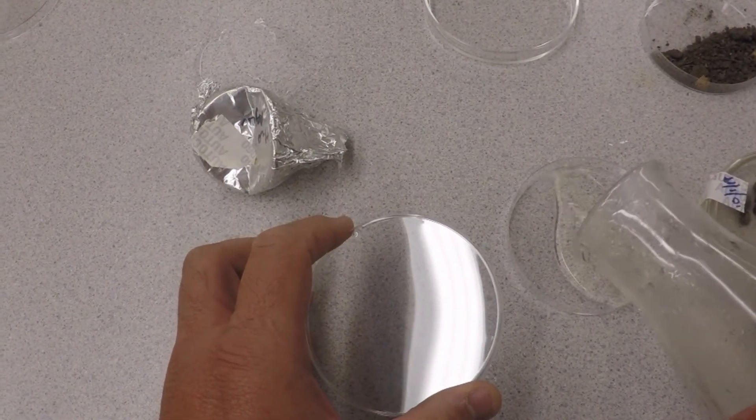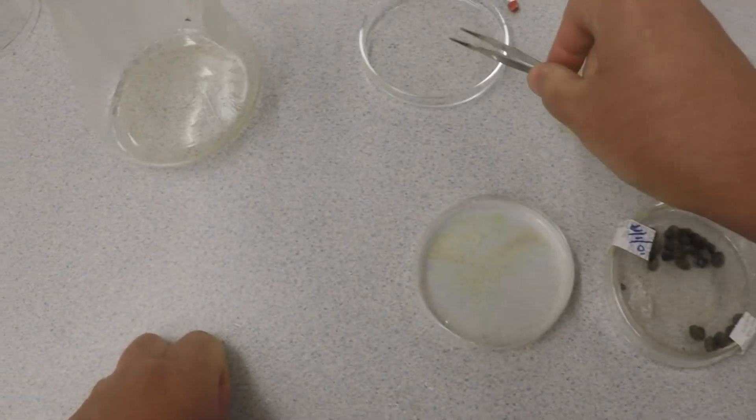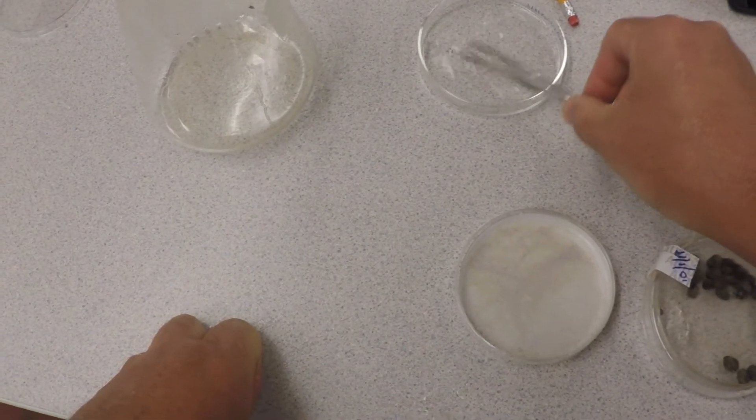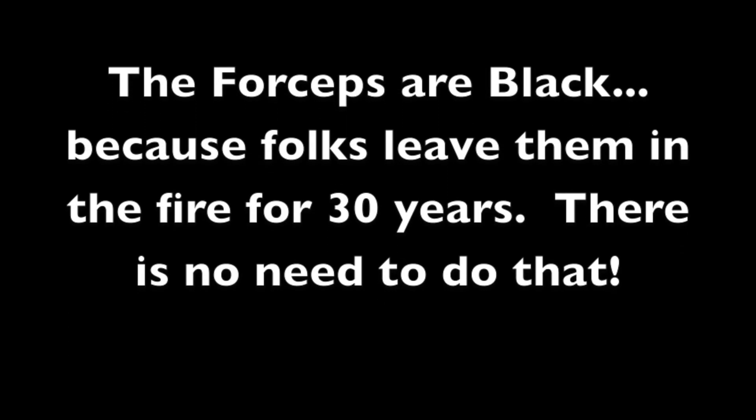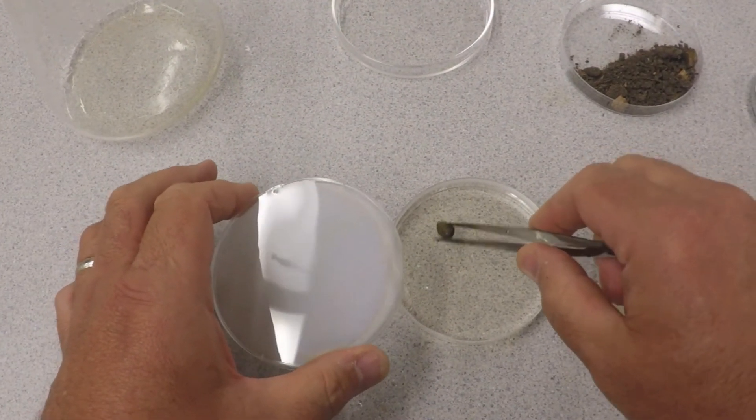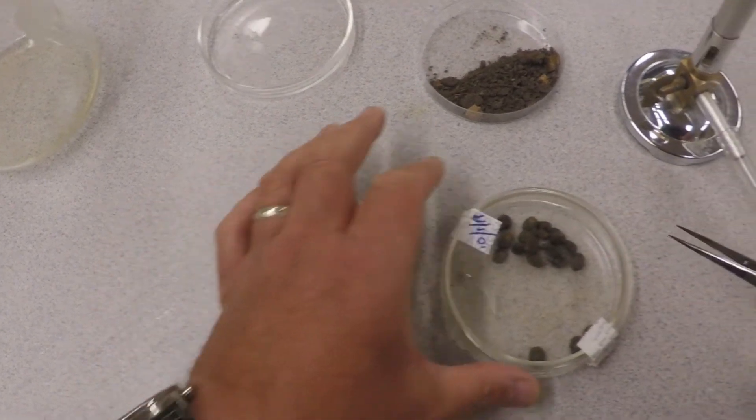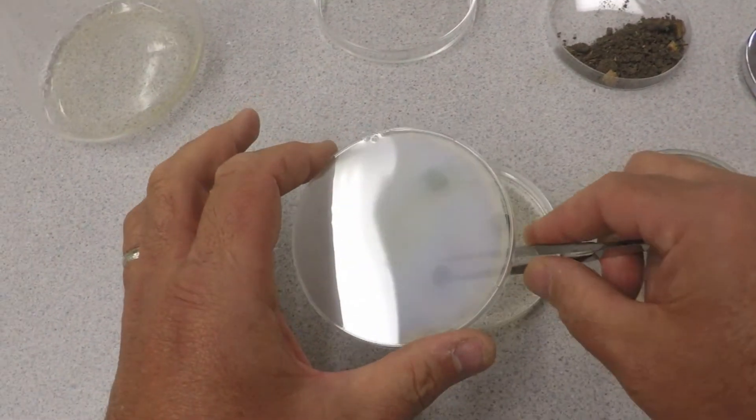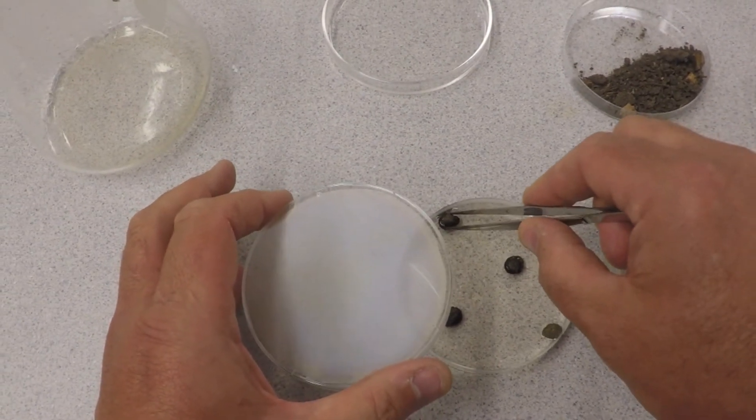These can be a little thicker than usual because you're going to leave these things for quite a while. Now you take your forceps, put them in some ethanol, flame it just to surface sterilize the forceps. And then you grab a few of these little dung pellets and you just pop them into the water agar.